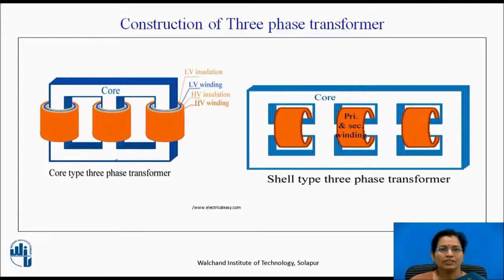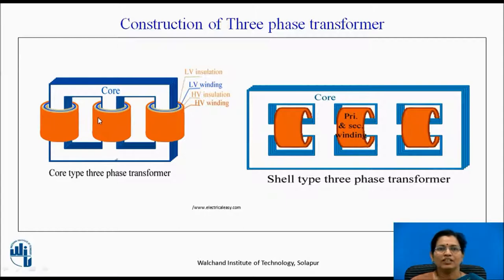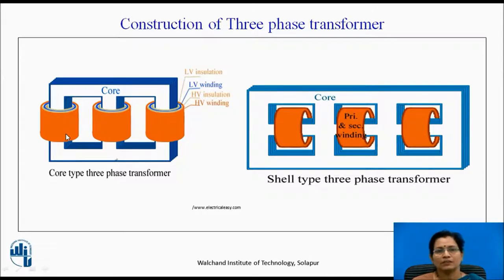In this diagram, you can see the core-type transformer and shell-type transformer. The three-phase winding is placed on three limbs. The three limbs are provided with three windings. The primary winding and secondary winding are connected on the same limb to provide maximum linking of the magnetic fluxes from primary to secondary. When we connect AC voltage to the primary winding, that creates fluctuating fluxes in this transformer, and those fluctuating fluxes are linked to the secondary winding.